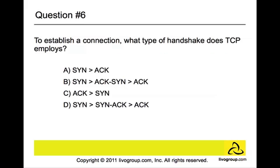Question number six: To establish a connection, what type of handshake does TCP employ? The answer is three. TCP employs the SYN, SYN-ACK, and ACK handshake. TCP stands for Transmission Control Protocol. It is a connection-oriented protocol that provides reliable communication using handshaking, acknowledging, error detection, and session teardown. TCP uses a three-way handshake, and both the client and server have received an acknowledgement of the connection.